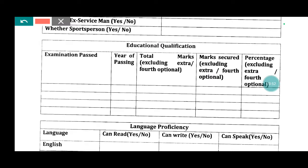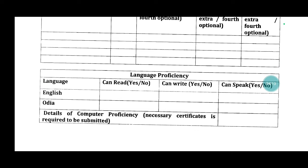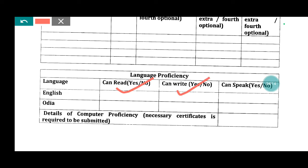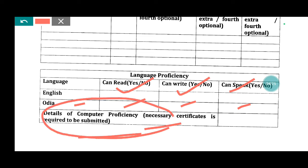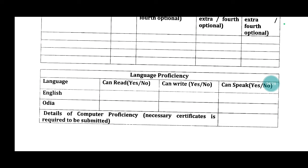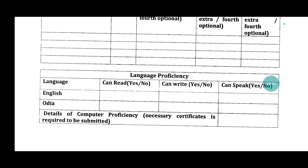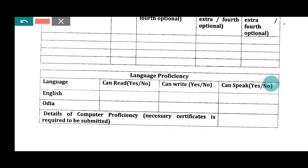If you are able to receive the students, you should fill up all the questions. We have to fill up all the questions. Minimum qualification — let's see. Language proficiency: English — yes, details of computer proficiency. A necessary certificate is required to submit. This is completely important and here we can find details of computer proficiency. Certificate required to submit — which certificate we can do, which course we can do.